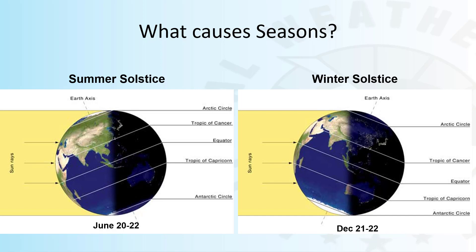During the winter solstice, the sun's rays are hitting the Tropic of Capricorn in the Southern Hemisphere directly. This is summer in the Southern Hemisphere and winter in the Northern Hemisphere.